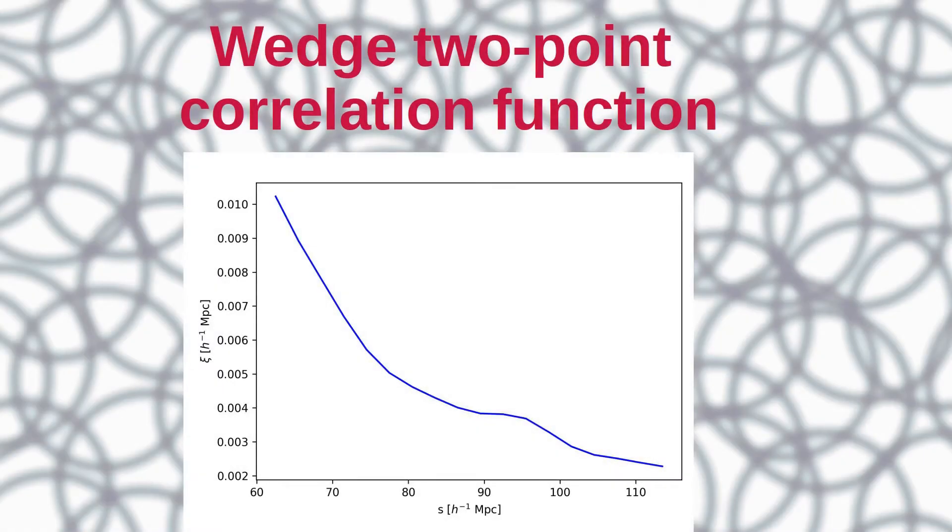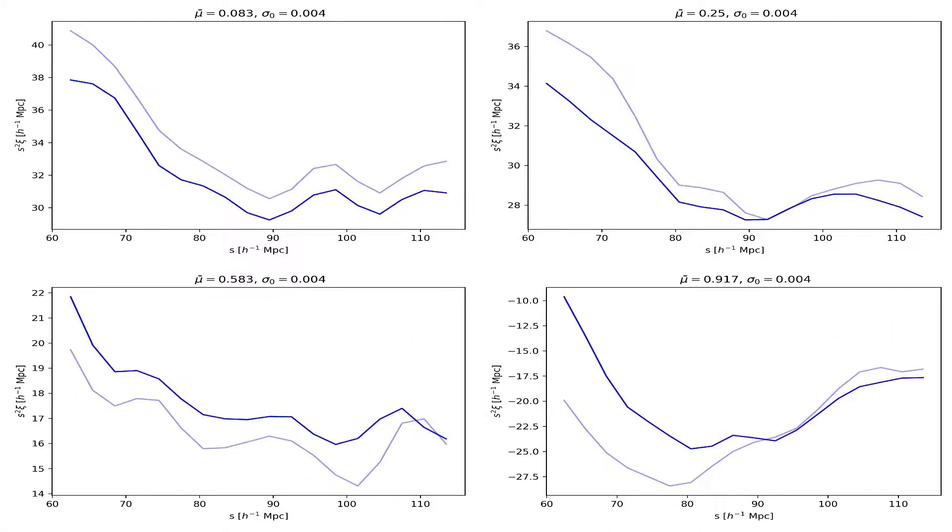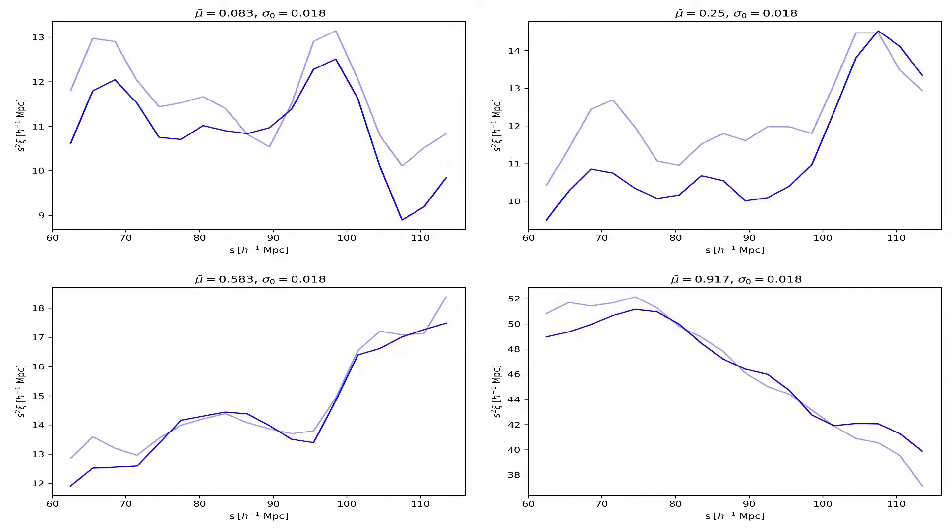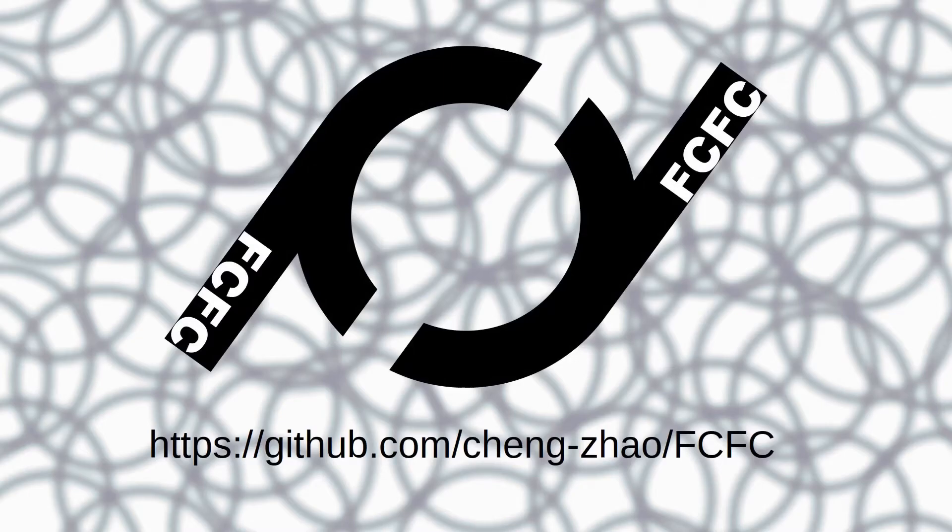This translates to the correlation function in the following way. On the x-axis we have the separation S and on the y-axis we have the two-point correlation function as expressed by the LS estimator. First, to improve the readability of the plot we multiply the y-axis by the separation squared. We can clearly see the BAO peak here. When comparing different mu bins of the same redshift error, we see that in the lower mu bins the BAO peak still remains detectable, while in the higher mu bins it gets notably washed out. At this point I want to give credit to the code that we are using to obtain the wedge two-point correlation function. FCFC is a fast Fortran-based public code available here.